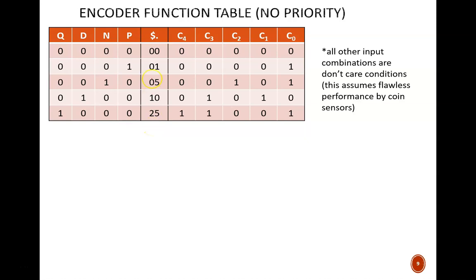This middle column represents the money equivalent of the coins deposited. For example, a quarter is 25 cents and a dime 10 cents. The output columns represent the binary equivalent of those money totals. Decimal 25 equals binary 11001. Decimal 10 equals 01010. No coins yields all zeros.